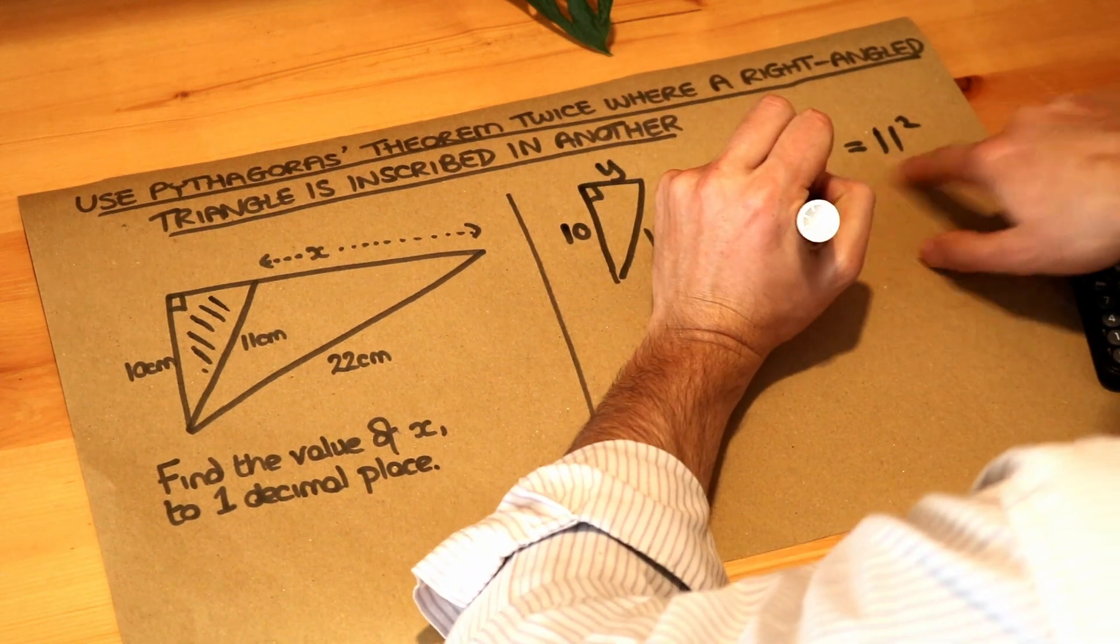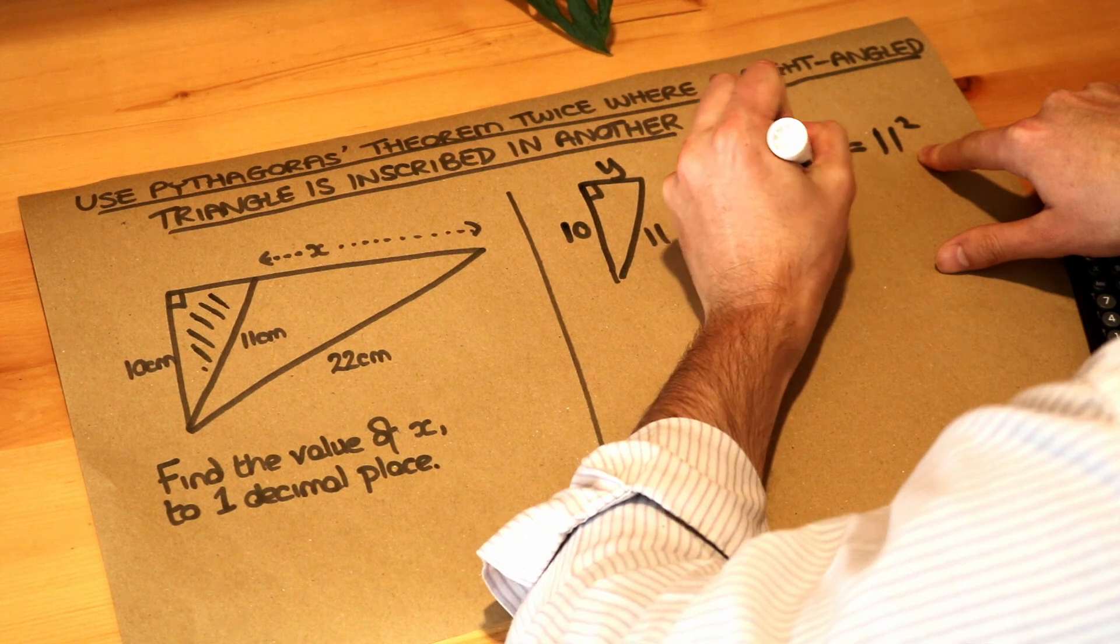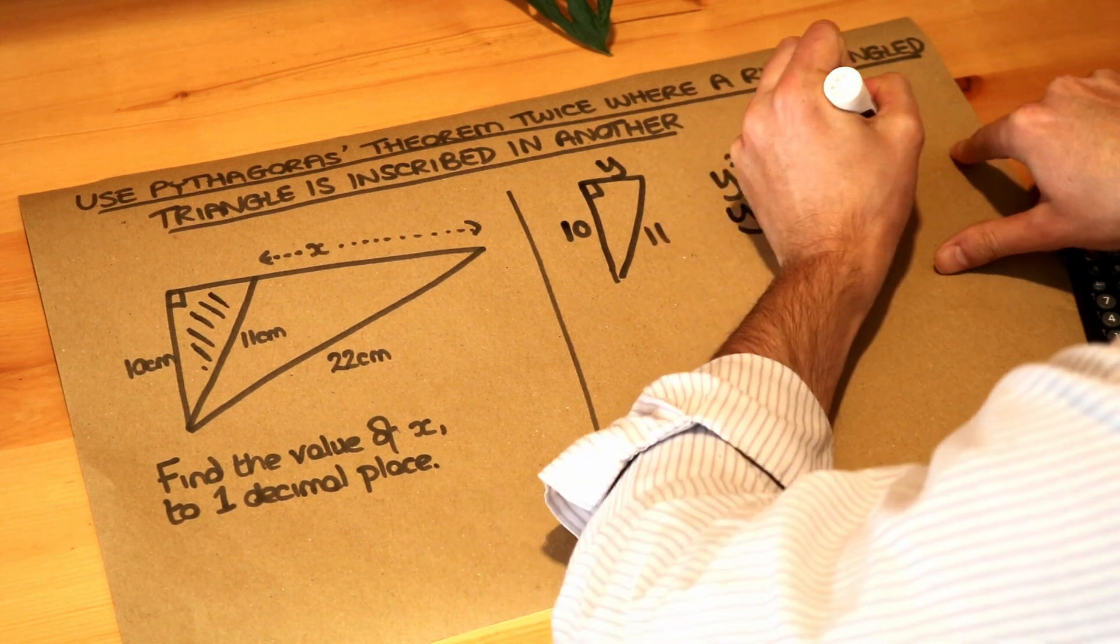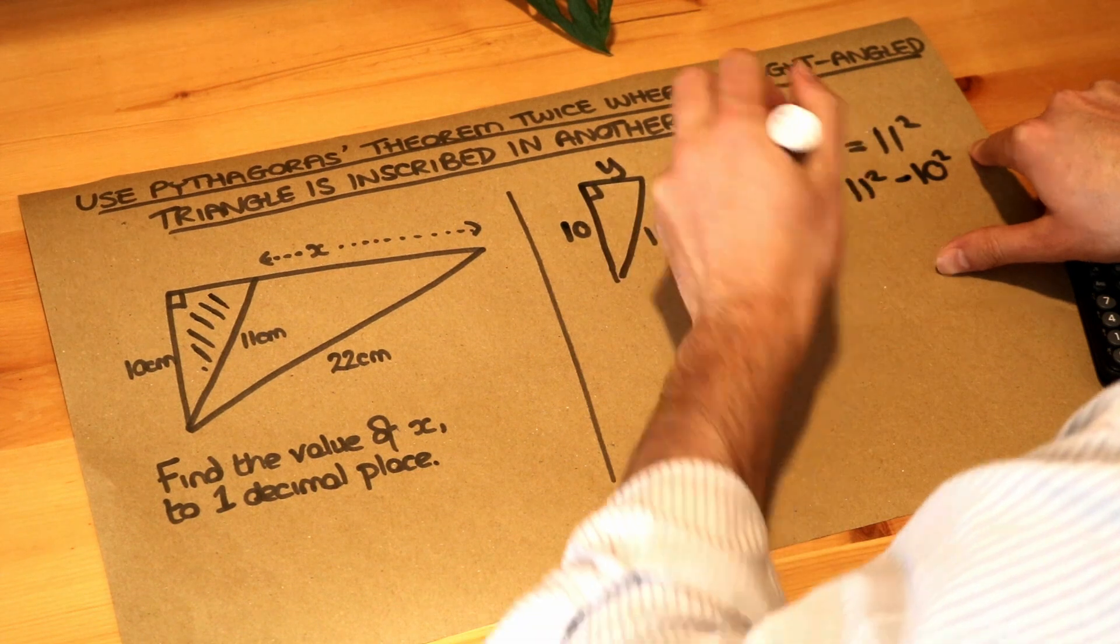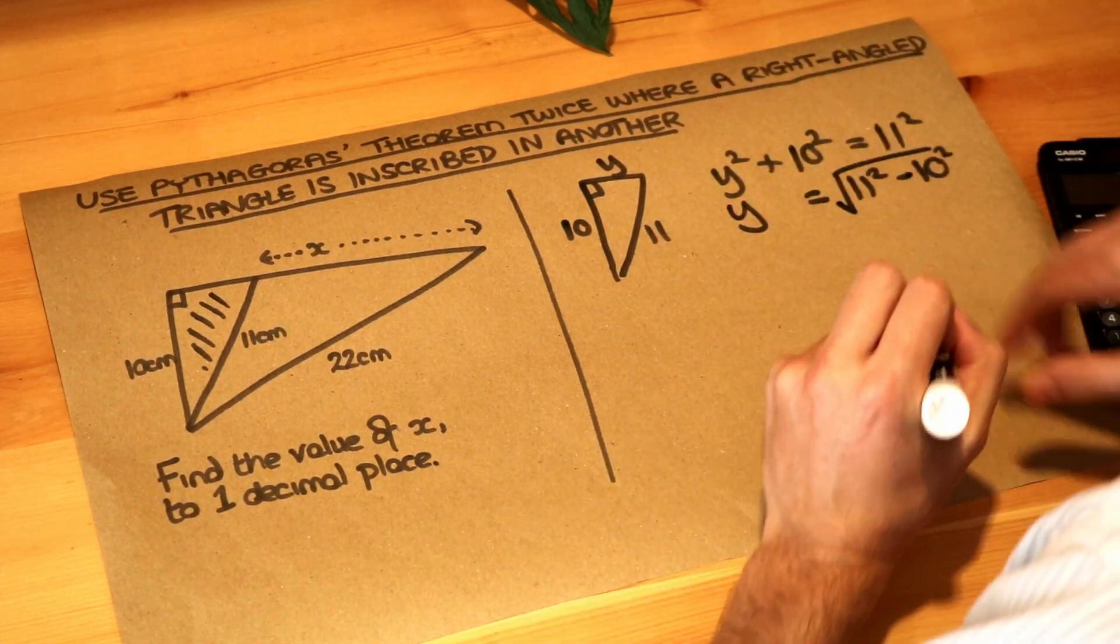We can just subtract the 10 squared so y squared is 11 squared minus that 10 squared and because we're going to have y squared, I want to square root both sides so it's just going to be that.